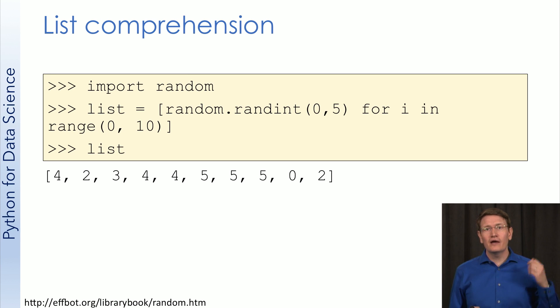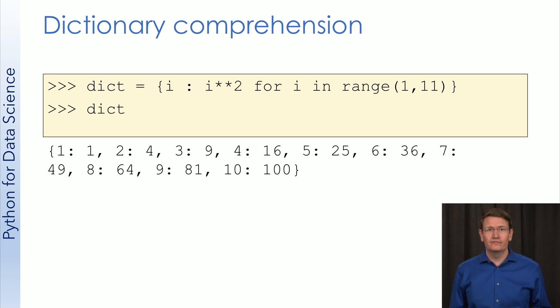Before we go through, I wanted to briefly mention that you can use these to build dictionaries as well. The only major difference from list comprehension is now we're specifying both the key and the value. Like we'd expect, the key is on the left side of the colon and the value is on the right side.